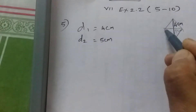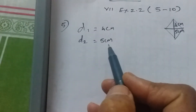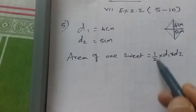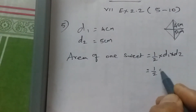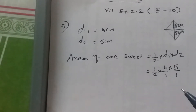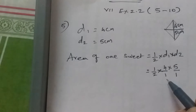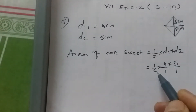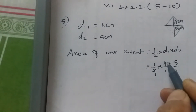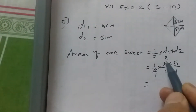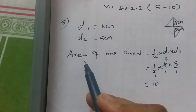Therefore the area of one sweet = (1/2) × d1 × d2 = (1/2) × 4 cm × 5 cm. Writing 4 as 4/1 makes the numerator and denominator clear. Cancel 2 and 4: two twos are four, so we get 1 and 2. Multiply the numerators: 2 × 5 = 10. The unit of area is square centimeter, so the area of one sweet is 10 square centimeter.